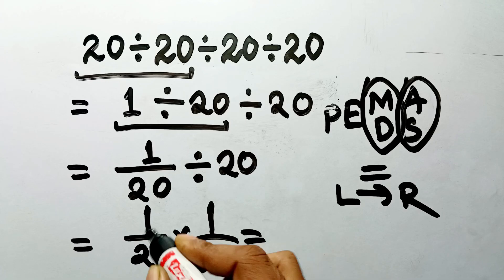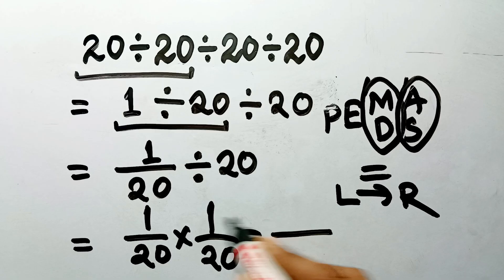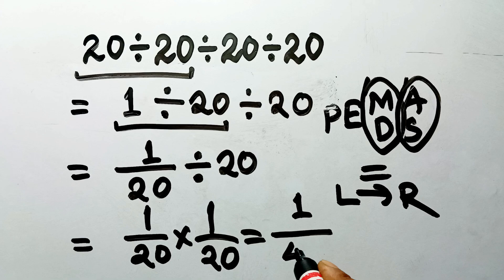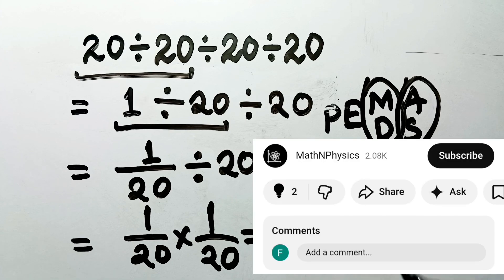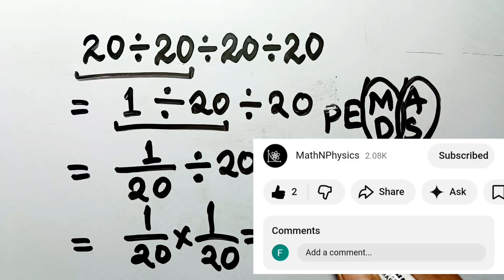Now, we just multiply across. The numerator, 1 times 1, gives us 1. The denominator, 20 times 20, gives us 400. So, we have 1 over 400, and this is our final answer to this problem.